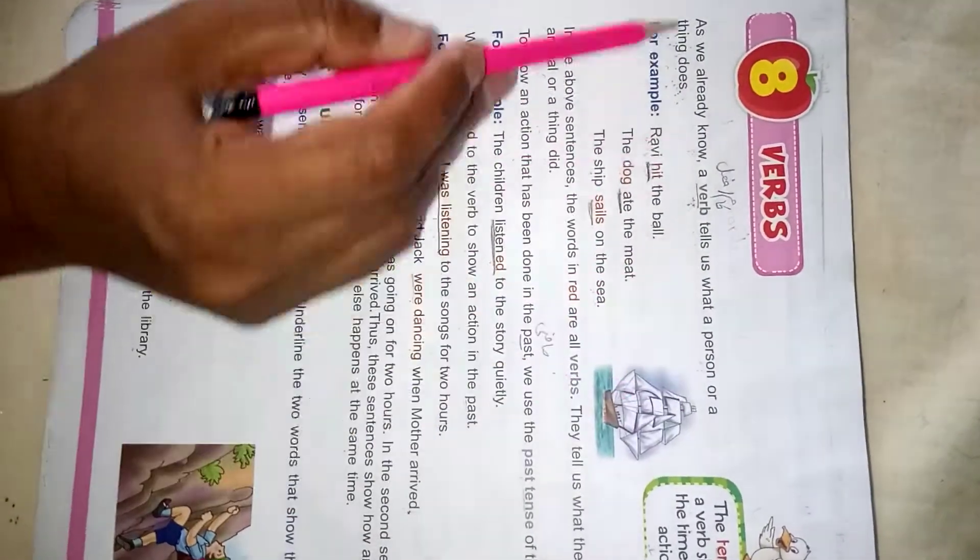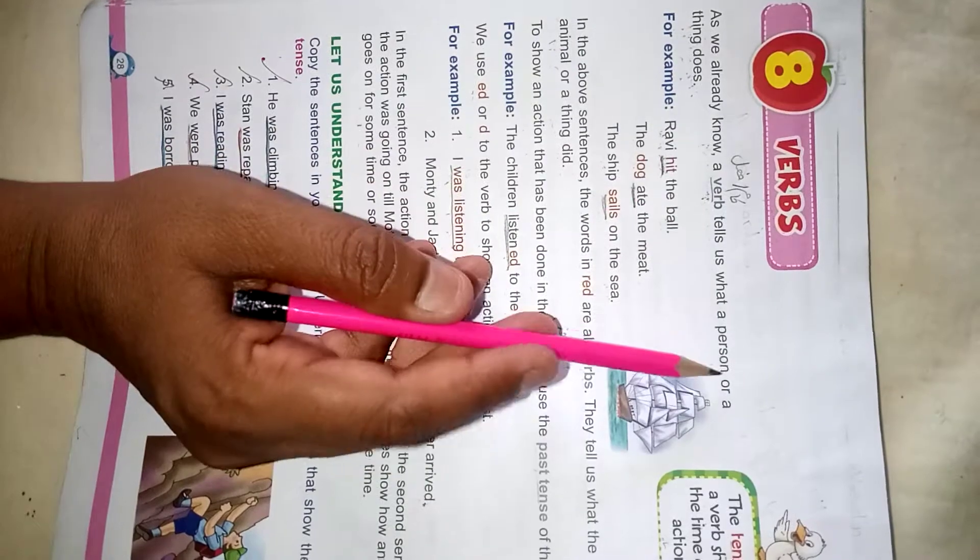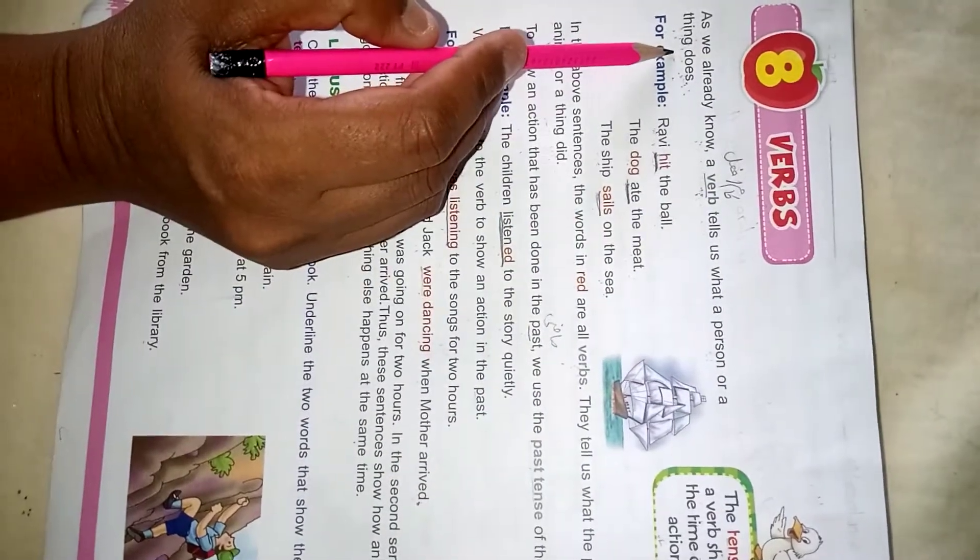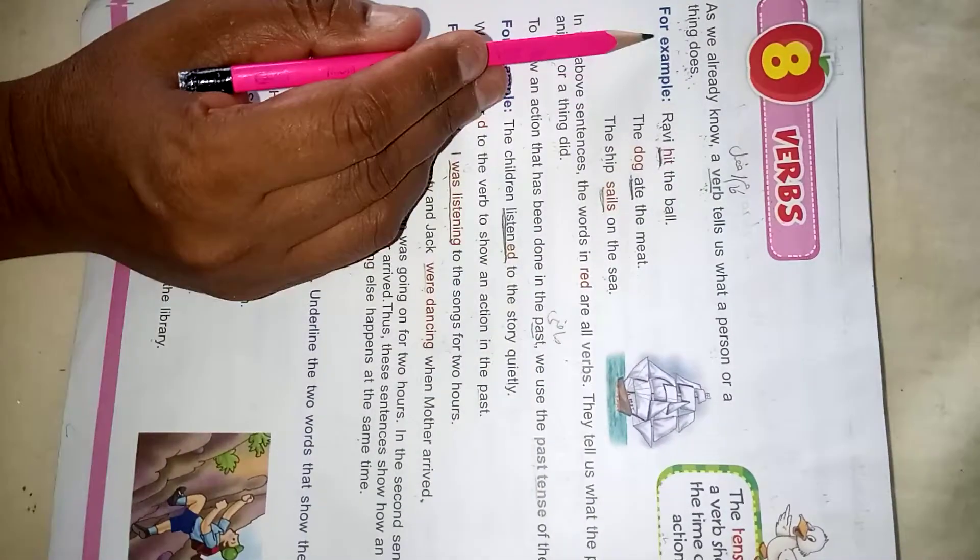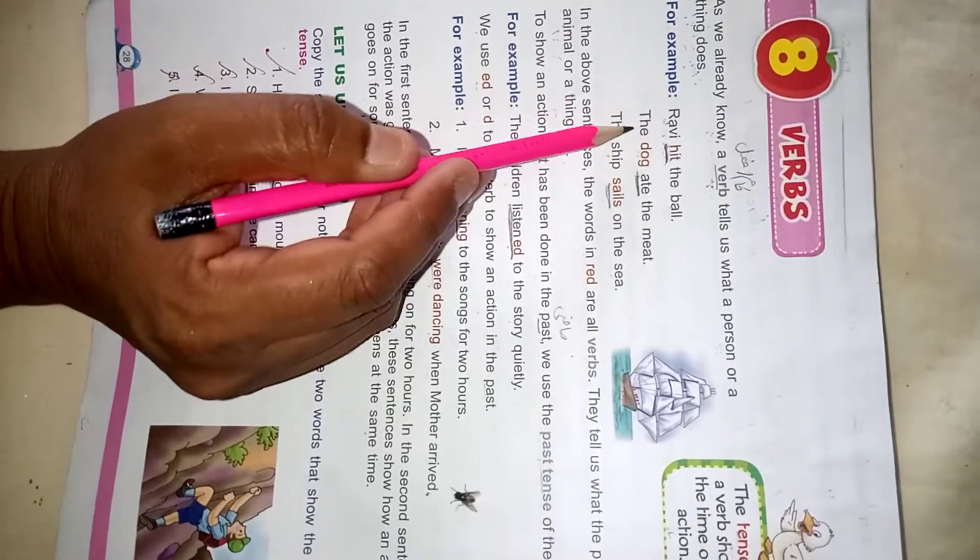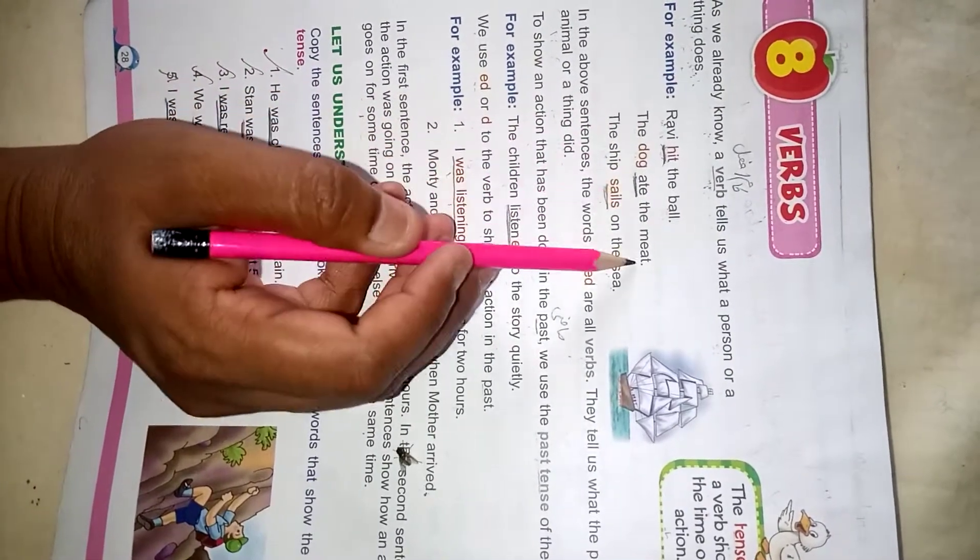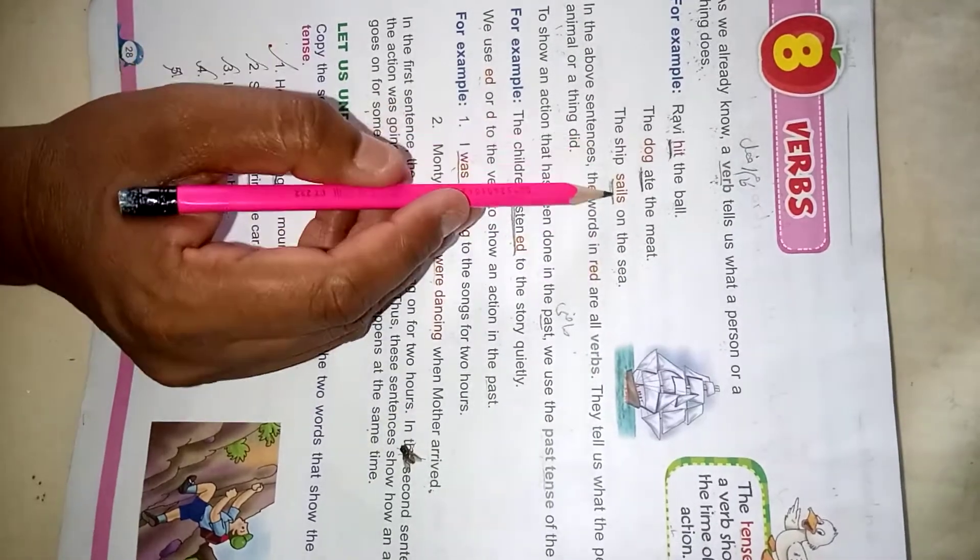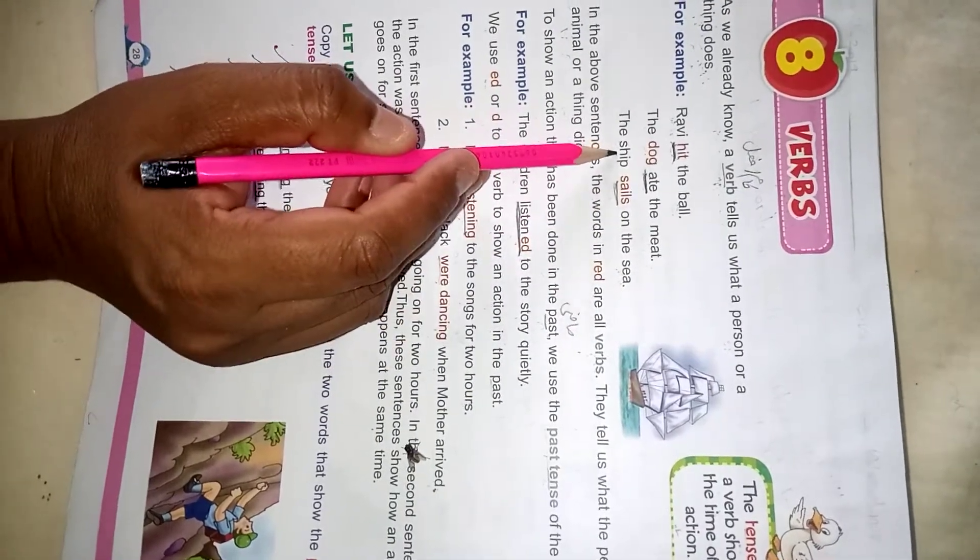A verb tells us what a person or a thing does. For example: Ravi hit the ball. The dog ate the meat. The ship sails on the sea.